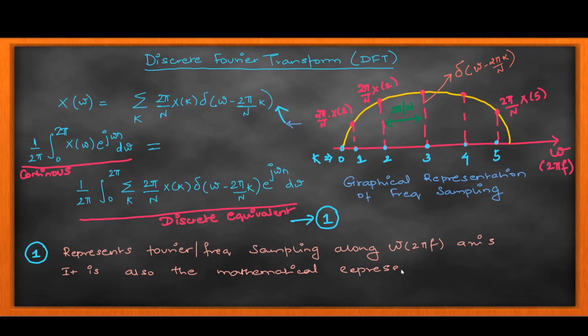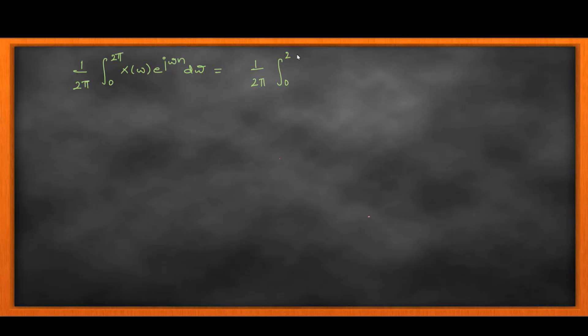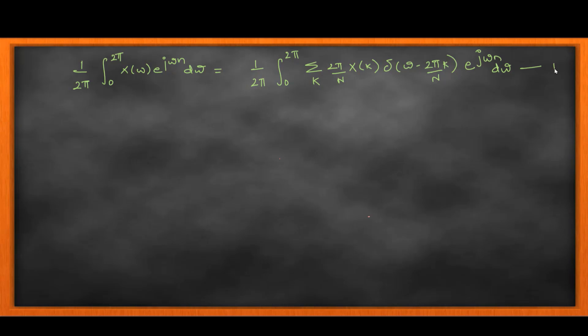The left-hand side continuous form representation is the continuous Fourier transform — a CFT formula. Let's not worry about CFTs; we will only focus on DFTs for this class. So 1/(2π) ∫₀²π X(ω) e^(jωn) dω is my left-hand side, the continuous form. The right-hand side is my discrete form. I'm going to regroup it because I have a summation over k and an integral over ω, so I'll group what can be integrated and what can be summed.